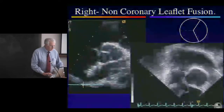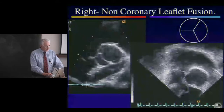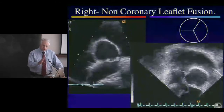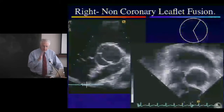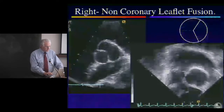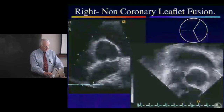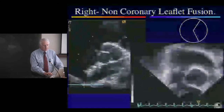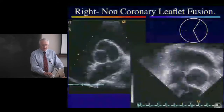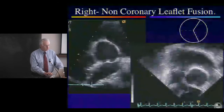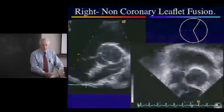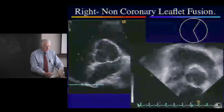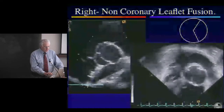For right non-coronary leaflet fusion, we noticed certain differences, particularly with aortic root measurements. When there was dilation of the aortic root with right non-coronary fusion, it was usually more profound and diffuse than with left-right fusion. And you can see that transesophageally as well.